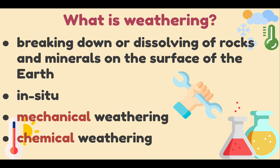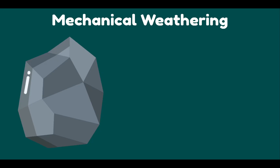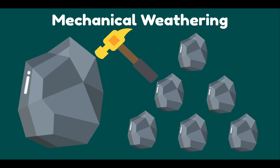Let's start with mechanical weathering, also called physical weathering and disaggregation, which causes rocks to crumble. Consider a rock — when crushed using a hammer, it produces smaller rocks. These smaller rocks are just like the bigger rock, but smaller. That means the rock has changed physically without changing its composition. The smaller pieces have the same minerals in the same proportions as the original rock.